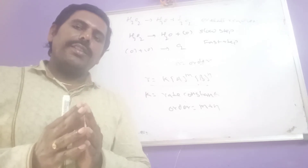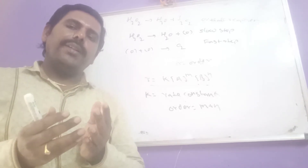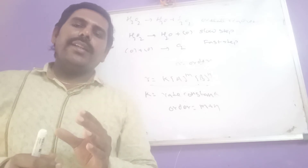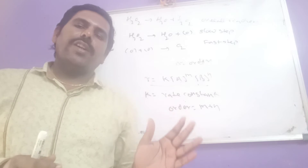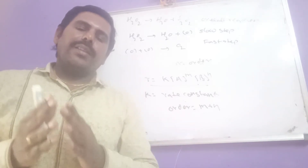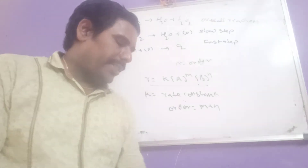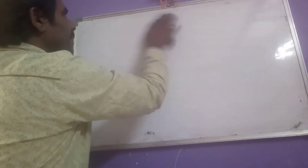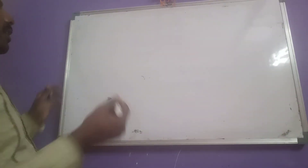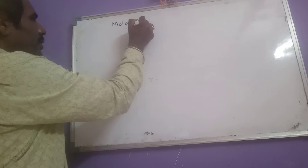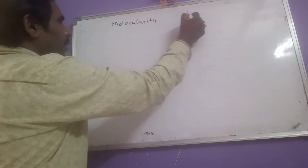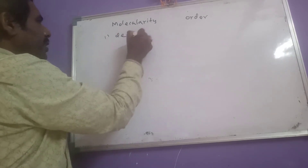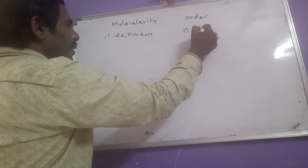The number of molecules appearing in the slow step is known as molecularity, while the number of molecules which affect the speed of the reaction is known as order. Let us see the differences between molecularity and order. The first difference is precisely that definition — molecularity is the number of molecules participating in the slow step, whereas order is the number of molecules affecting the rate of the reaction.